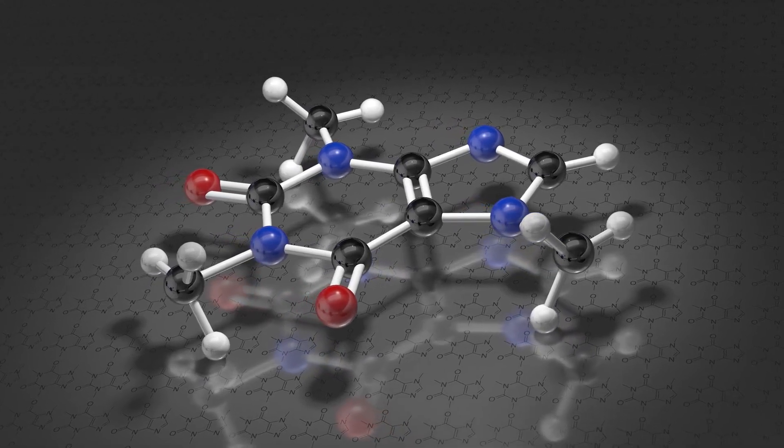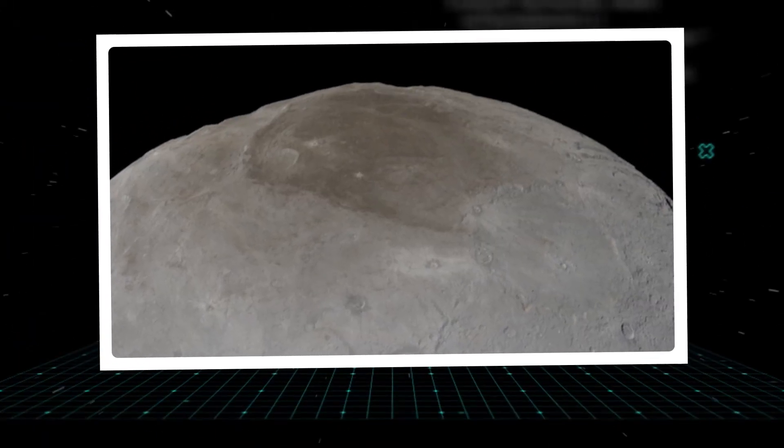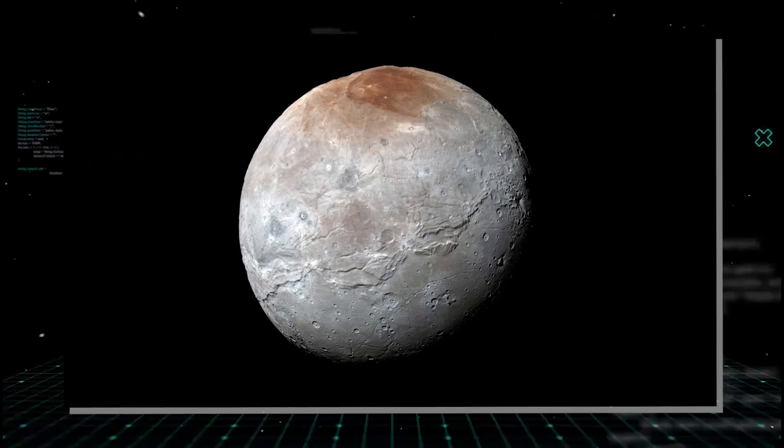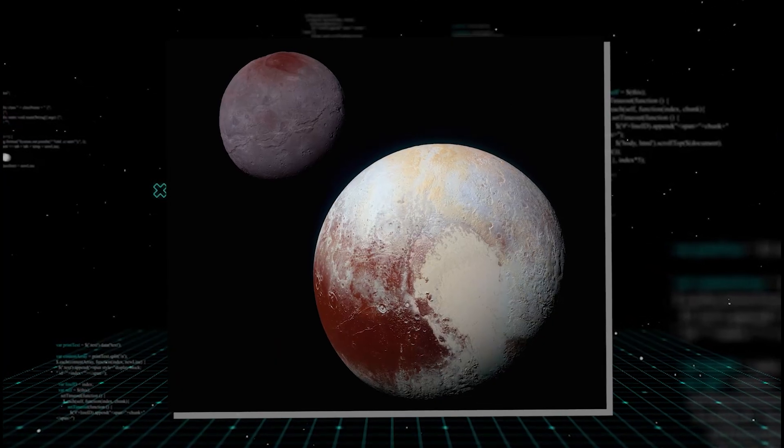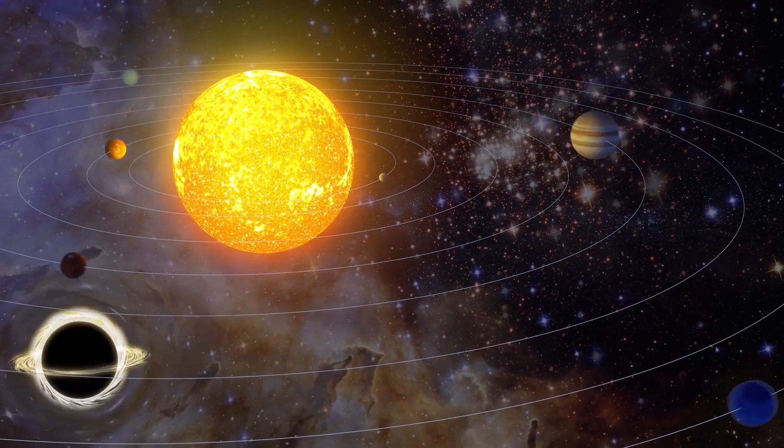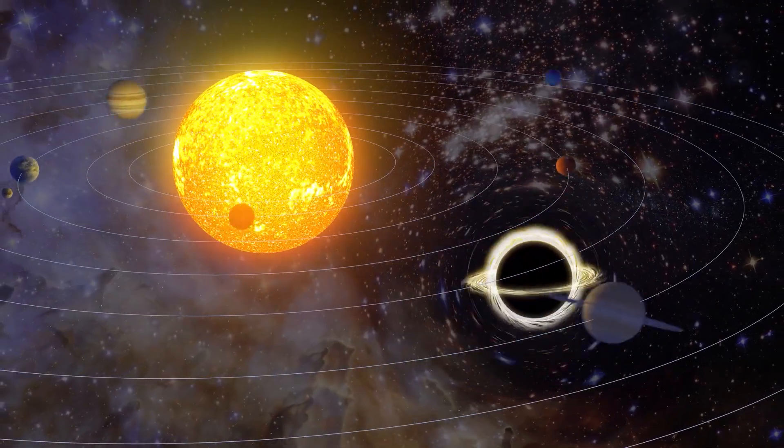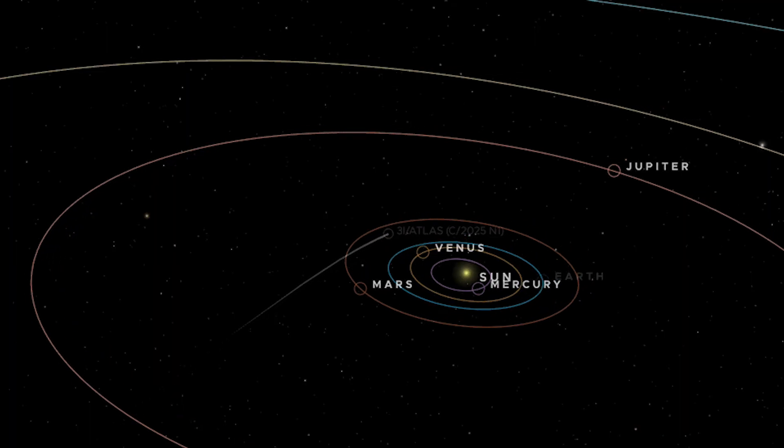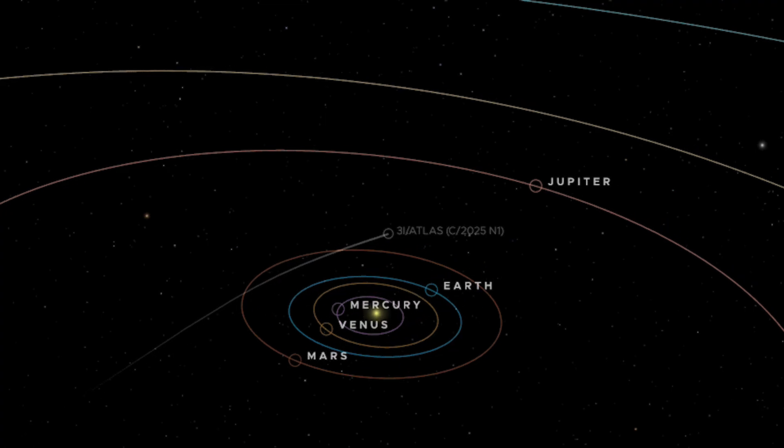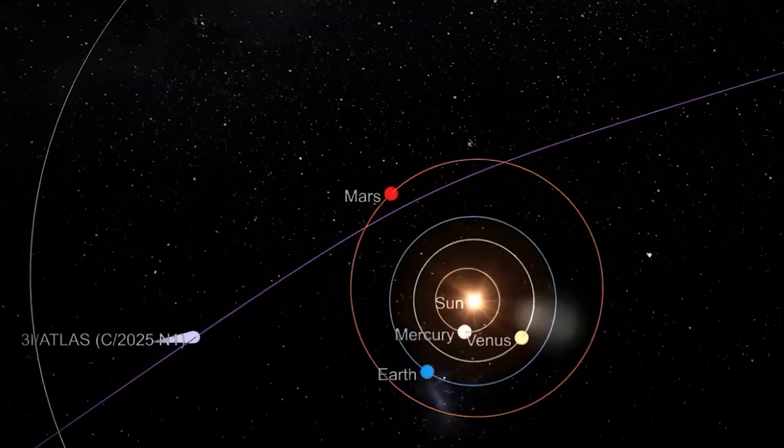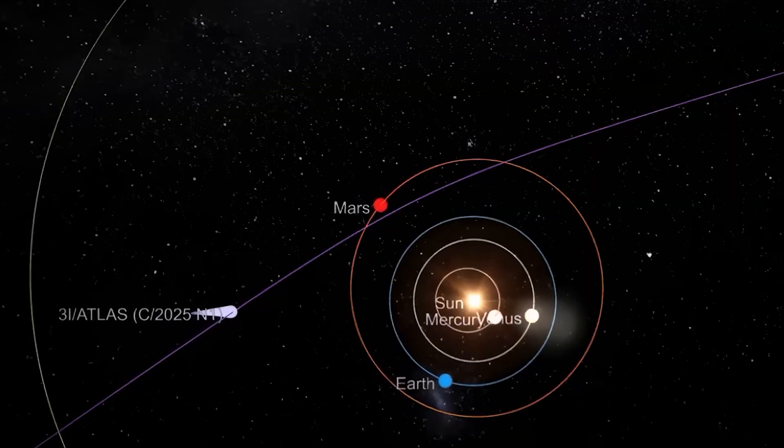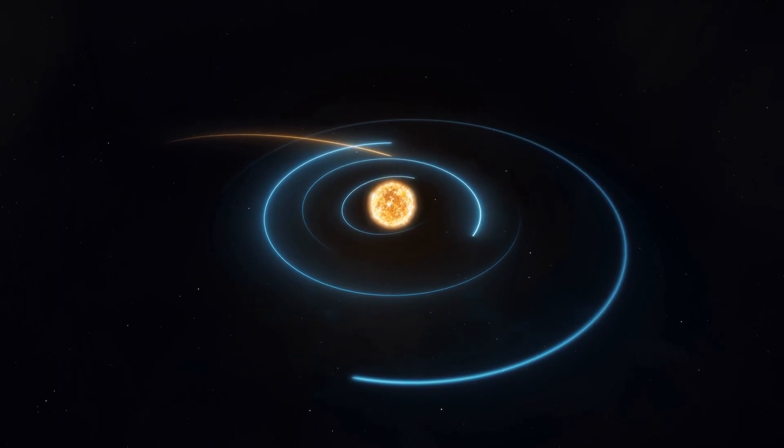One theory is that the original parent body was incredibly rich in organic compounds, often called tholins. These are complex reddish-brown substances created when ultraviolet light from the sun hits simple molecules like methane and ethane. The surface of Pluto and many other outer solar system bodies are covered in this stuff. If 3I Atlas is a fragment of a body that was covered in a thick layer of these tholins, the gentle heating from the sun could be breaking them down and releasing the simpler carbon chains. This would explain the red color often associated with such objects and the sheer quantity of carbon being produced. This opens up a whole universe of possibilities.